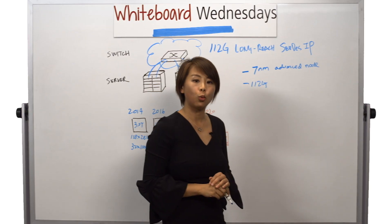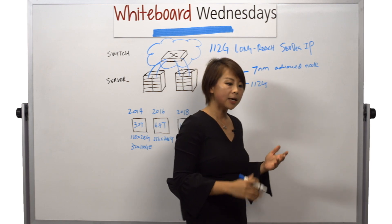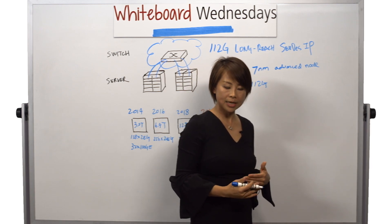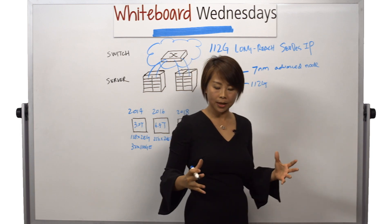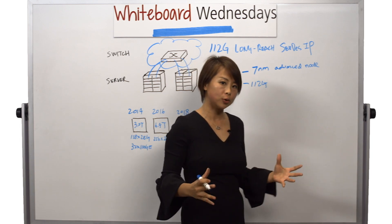And the data rate here, 112G, essentially doubles the port density from 56G and essentially allows the network bandwidth to double.